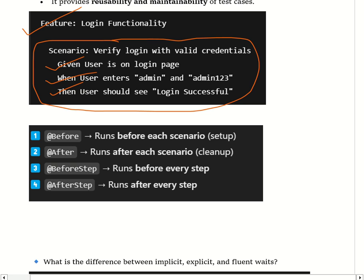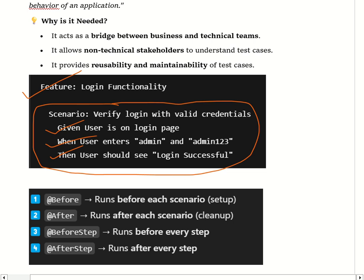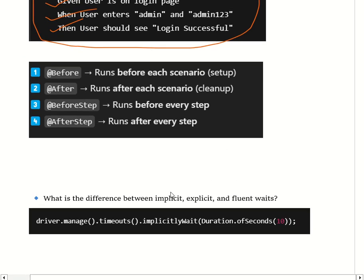To summarize: the feature file contains test scenarios written in plain English and describes how the application should behave. The step definition maps feature file steps to actual Java methods — using Selenium for UI and RestAssured for API testing. Hooks execute setup and teardown tasks using annotations like @Before and @After.